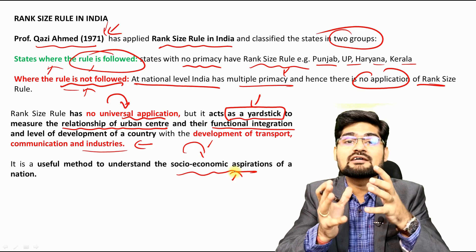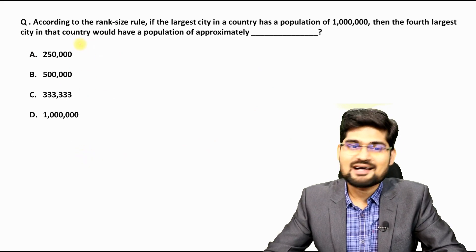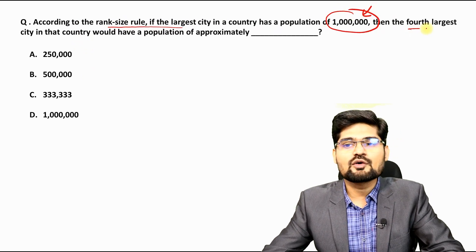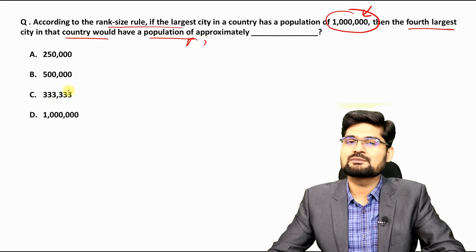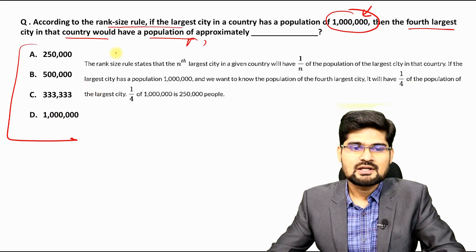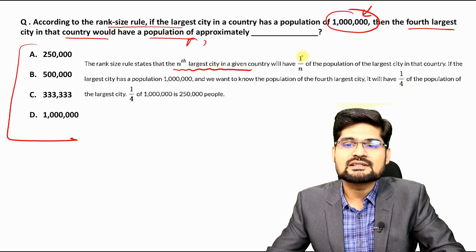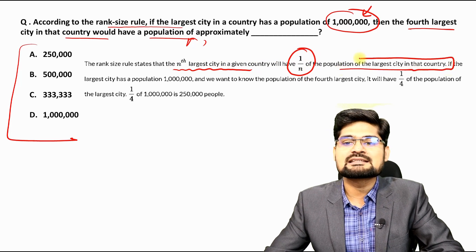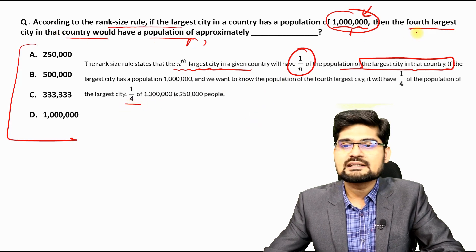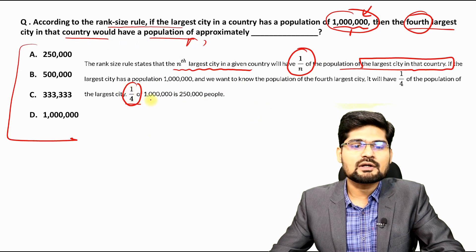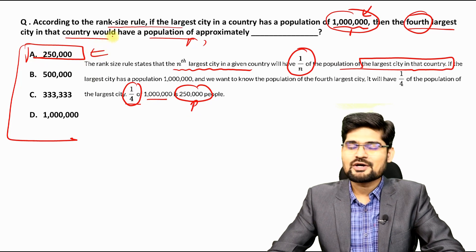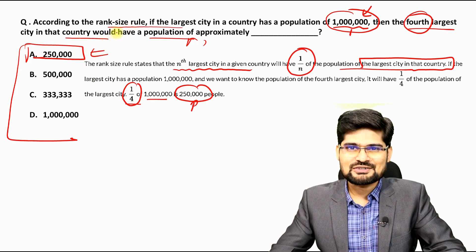Now let's answer the practice question. According to rank size rule, the population of the 4th largest city is calculated as: Pn = P1 / n = 1,000,000 / 4 = 250,000 people. So the answer is 250,000, and option A is correct.